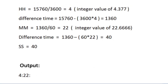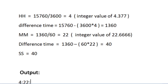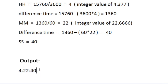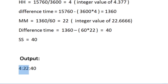Now we calculate the seconds and update the difference time first. The difference time was 1360, so 1360 minus 22 × 60 — because every minute has 60 seconds — gives 1360 − 1320 = 40 seconds. We store the remaining seconds in SS, which is 40. So this gives us the complete hour-minute-second format: the employee stayed in the office for 4 hours, 22 minutes, and 40 seconds.